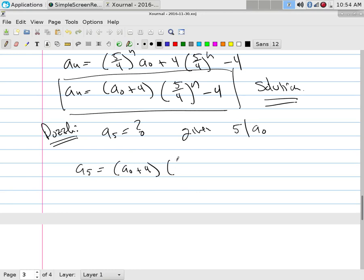Well, a_5 has to be a_0 plus 4 times (5/4)^5 minus 4, which happens to be a_0 plus 4 times 3125 divided by 1024 minus 4.